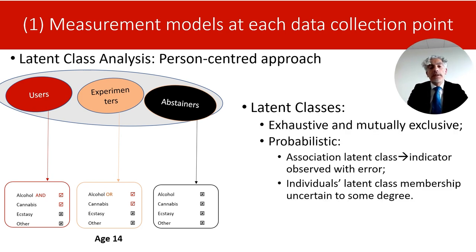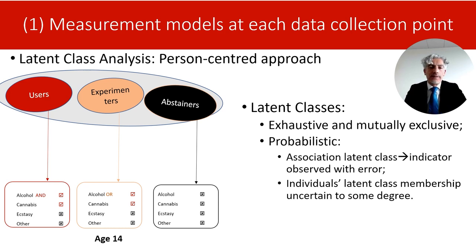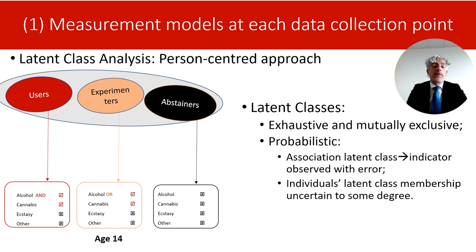Key assumptions of latent class analysis are that the classes we identify are exhaustive, meaning all individuals in the sample belong to one of the latent classes — each adolescent will be either in the users, experimenters, or abstainer class. The classes are also mutually exclusive, so an individual will belong to only one class; for example, an abstainer cannot be an experimenter. These classes are typologies of individuals that share the same propensity to display a specific behavior pattern.